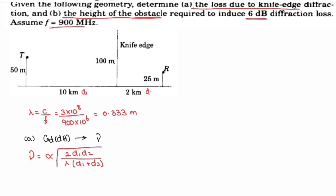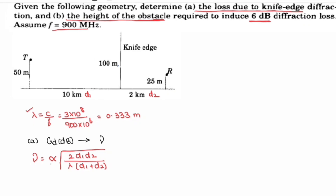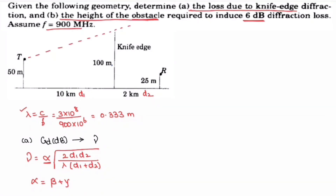D1 is 10 km and D2 is 2 km. We need to substitute lambda and alpha. Alpha equals beta plus gamma, so from the diagram we need to find beta and gamma. Beta is the angle formed at the transmitter side, and gamma is the angle formed at the receiver side.